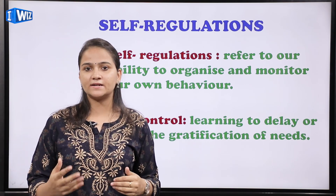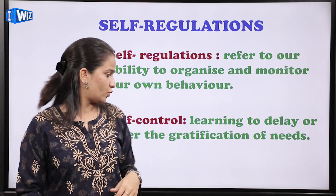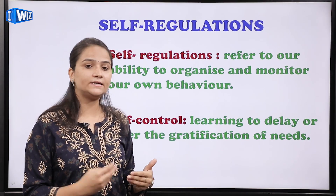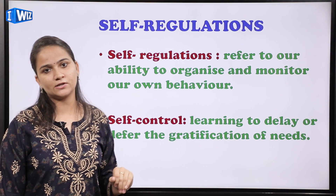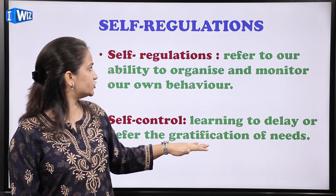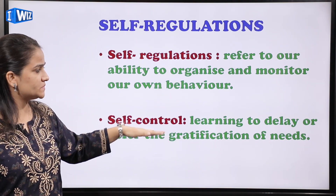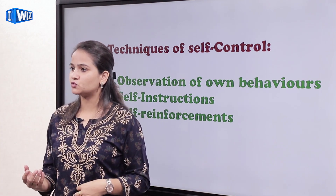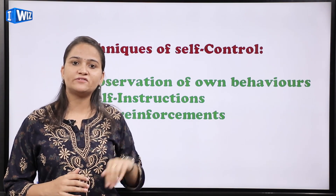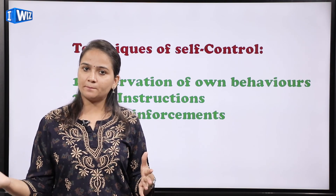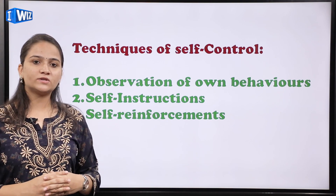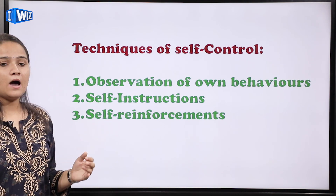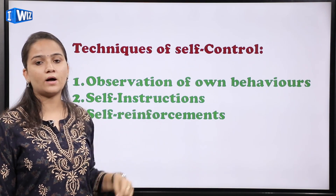Suppose एक छोटा बच्चा है उसे ice cream चाहिए, but parents say नहीं, we'll take it in the afternoon। If the child is able to control this desire, the self-control of the child is high। अगर बच्चा delay नहीं कर पाता and wants to eat it right now, that means the self-control of the child is low। As an individual grows, उम्र के साथ self-control और self-regulation बढ़ते हैं। बचपन में ये दोनों abilities इनसान की कम होती हैं।